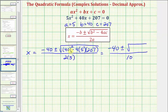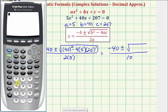Let's evaluate the discriminant on the calculator. So we have 40² minus 4 times 5 times 207, which equals -2540.